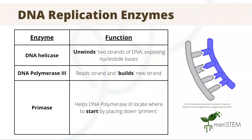So, let's have a look at some of the enzymes involved in the process of DNA replication. We have DNA helicase, which helps unwind two strands of DNA, which in turn exposes the nucleotide bases. DNA polymerase 3 then comes in and reads the strands and synthesizes a new one. Primase actually helps the DNA polymerase locate where to start by placing down primers, which are short chains of DNA. Now, remember that these are just a couple of many enzymes involved in this process.